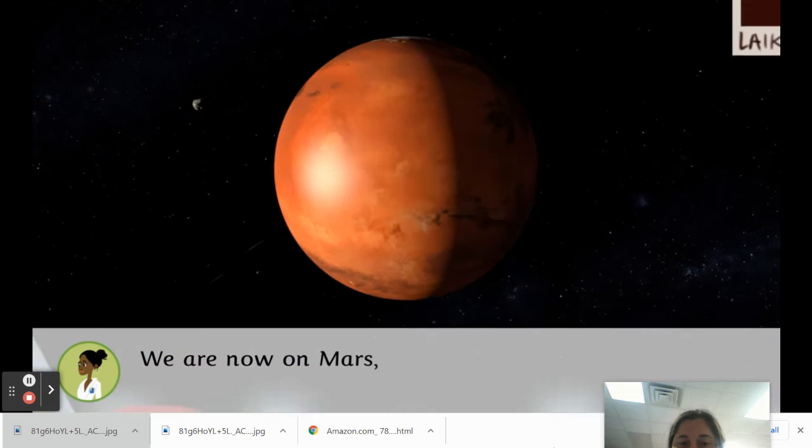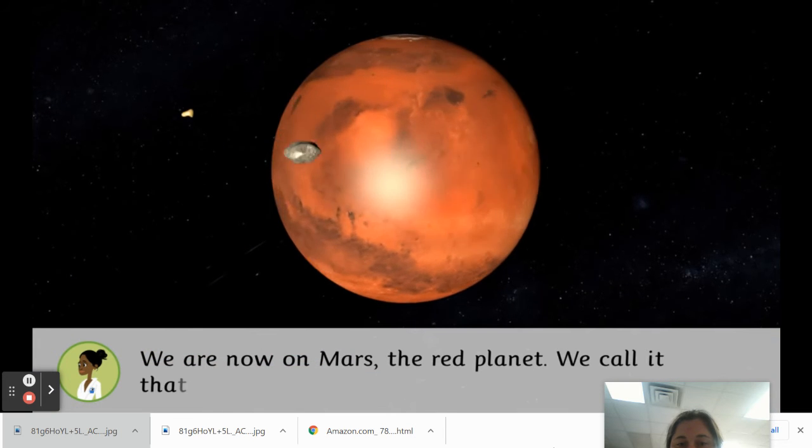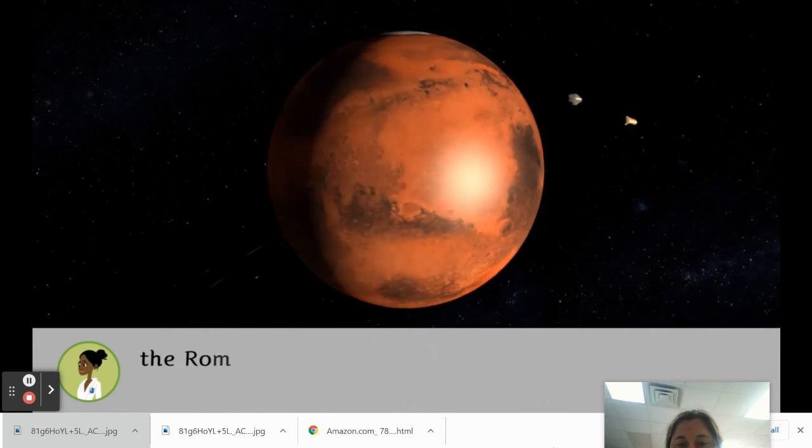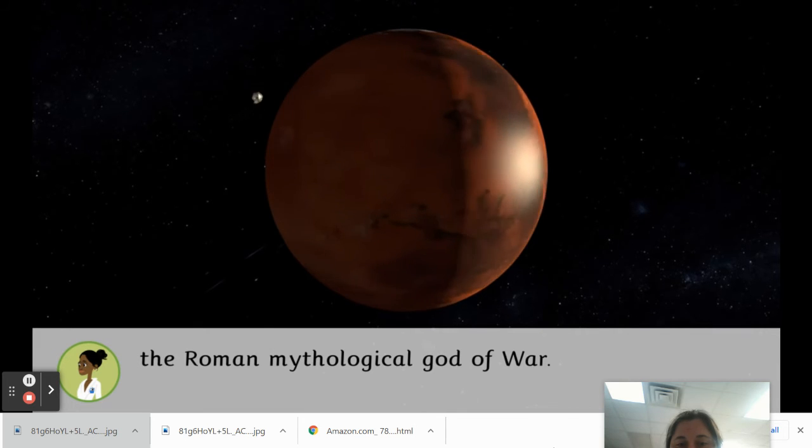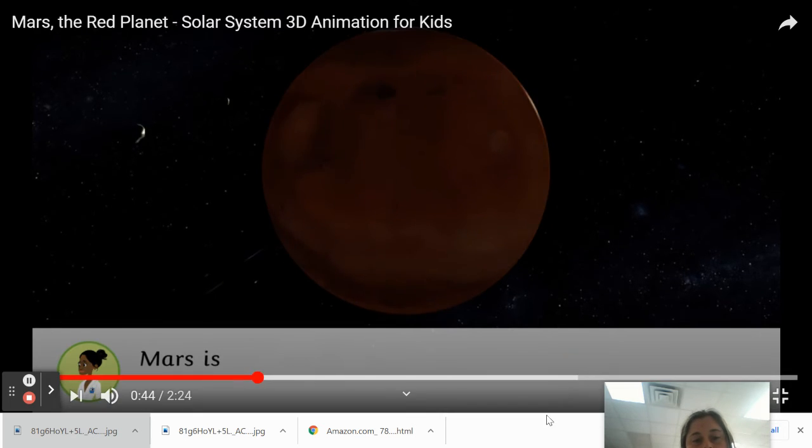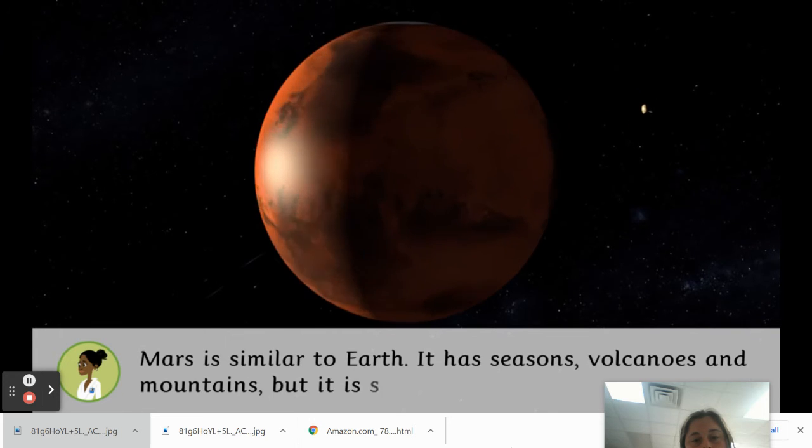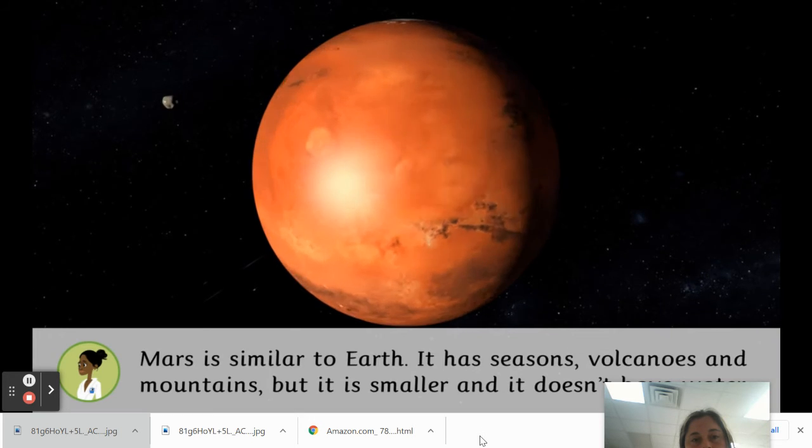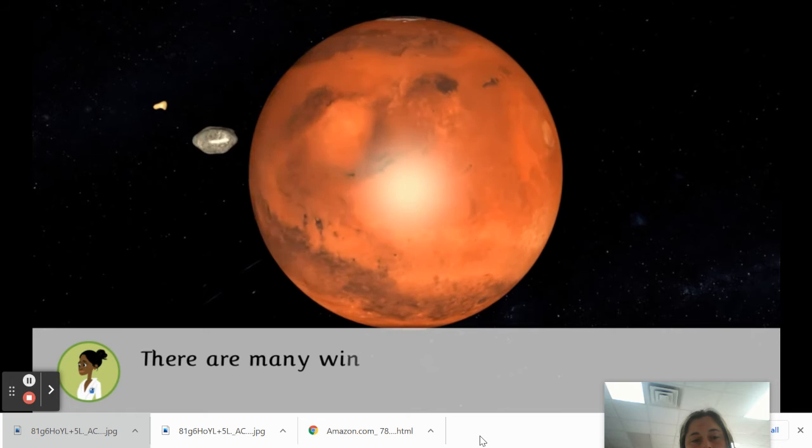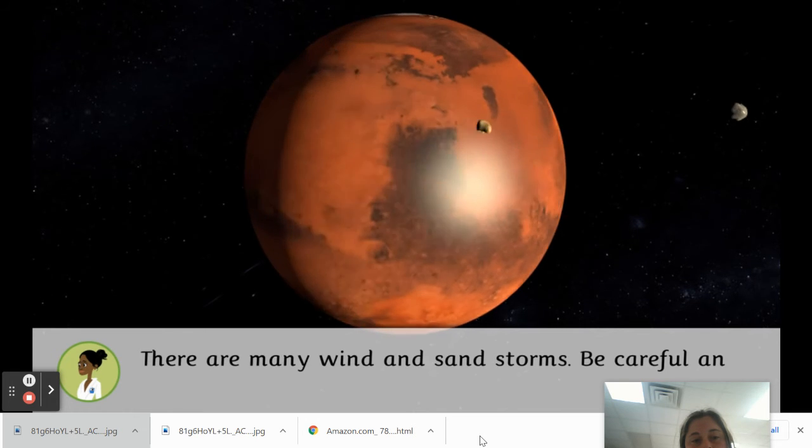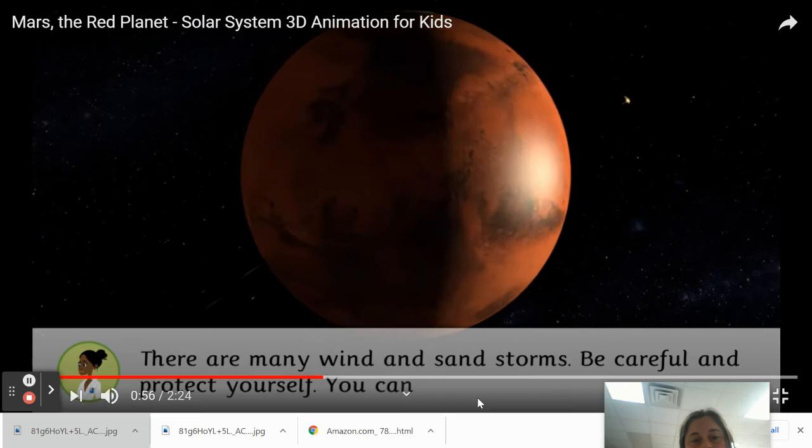We're now on Mars, the red planet. We call it that because of its color. But the name comes from the Roman mythological god of war. Mars is similar to Earth. It has seasons, volcanoes and mountains, but it is smaller and it doesn't have water. There are many wind and sand storms. Be careful and protect yourself. You can get blown away.